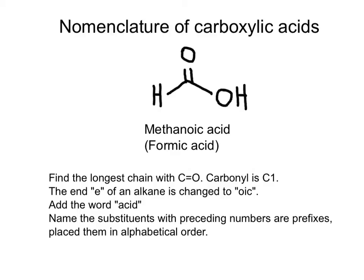In the IUPAC nomenclature system, carboxylic acids are named according to the same rules as those learned in the chapter of alkanes, with some modifications. When naming a carboxylic acid, the E of the corresponding alkane name will be replaced with 'oic acid'. For example, from the molecule of methane, we get methanoic acid.